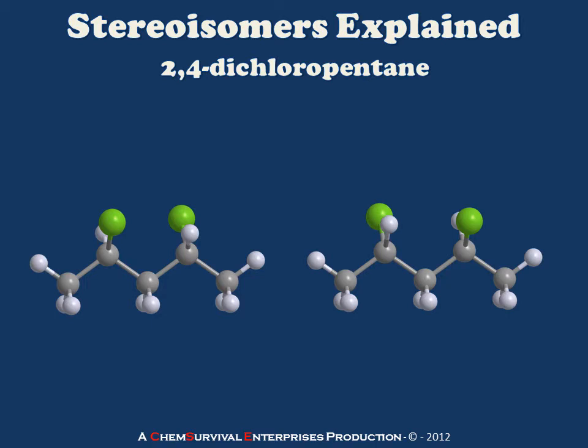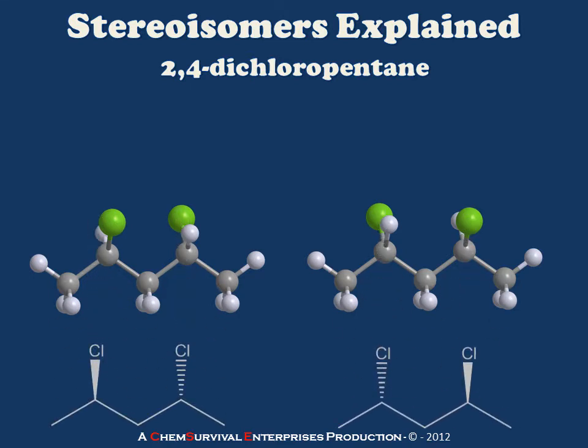Let's begin by considering two different stereoisomers of the molecule 2,4-dichloropentane. Shown in this slide are two of those isomers. Notice that they have all the same atom-bond connectivity, but geometrically they appear different. This is easier to see if we draw these out as a perspective skeletal structure — notice the orientation of the chlorine atoms either above or below the plane of the page and how they make each molecule look distinct.